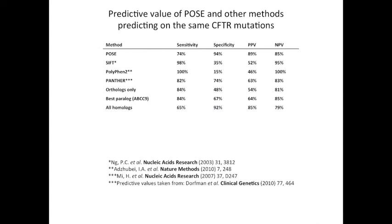Using all homologs, we take a sensitivity hit and a big increase in specificity. Looking at these last three examples, you see that we get more specificity out of the orthologs and a little bit more specificity out of the paralogs most likely. And it would appear that our optimization method is finding the sequences within these groups that best balance the sensitivity and specificity.